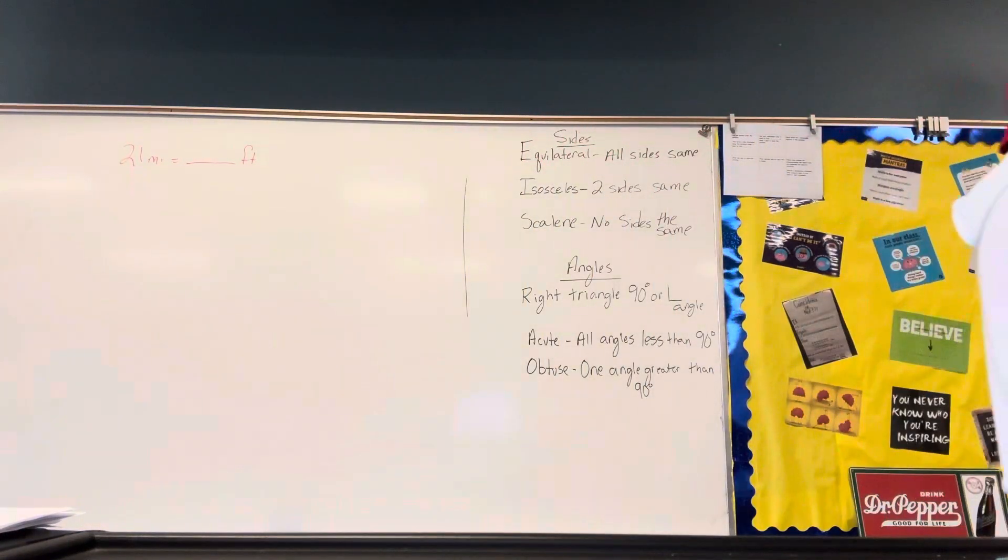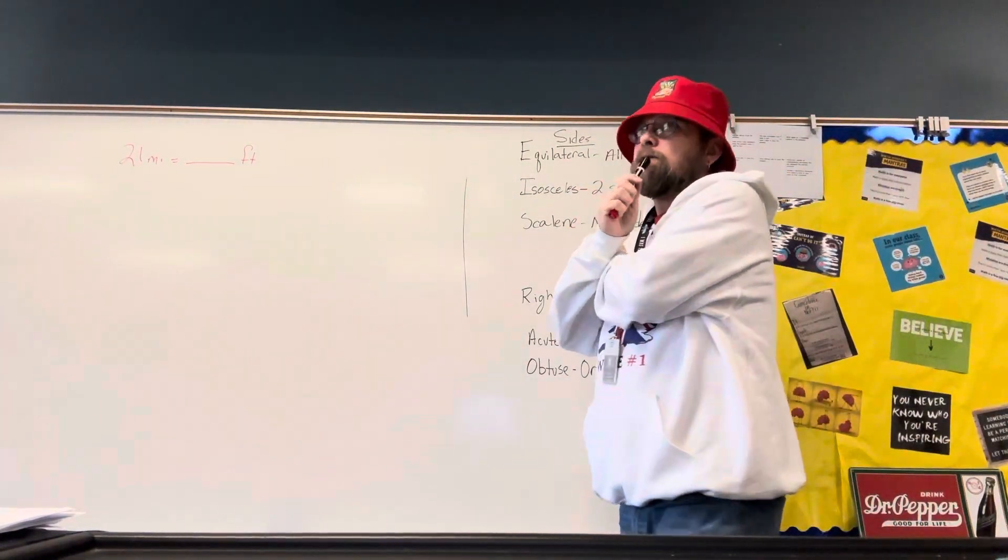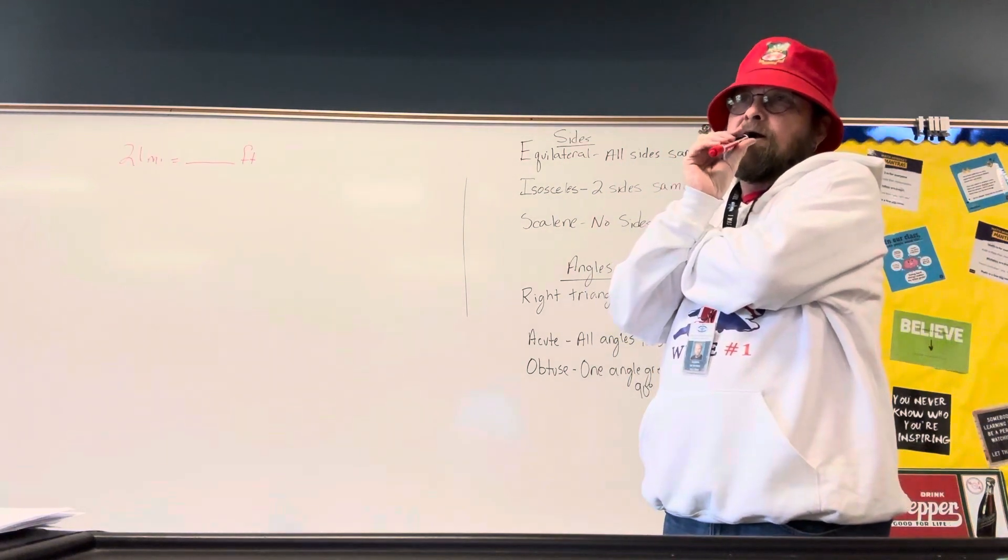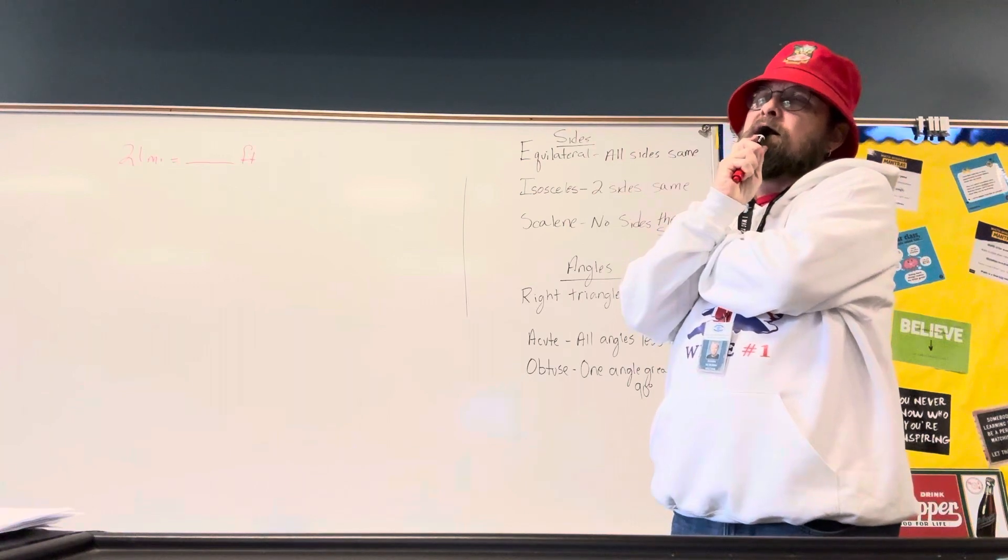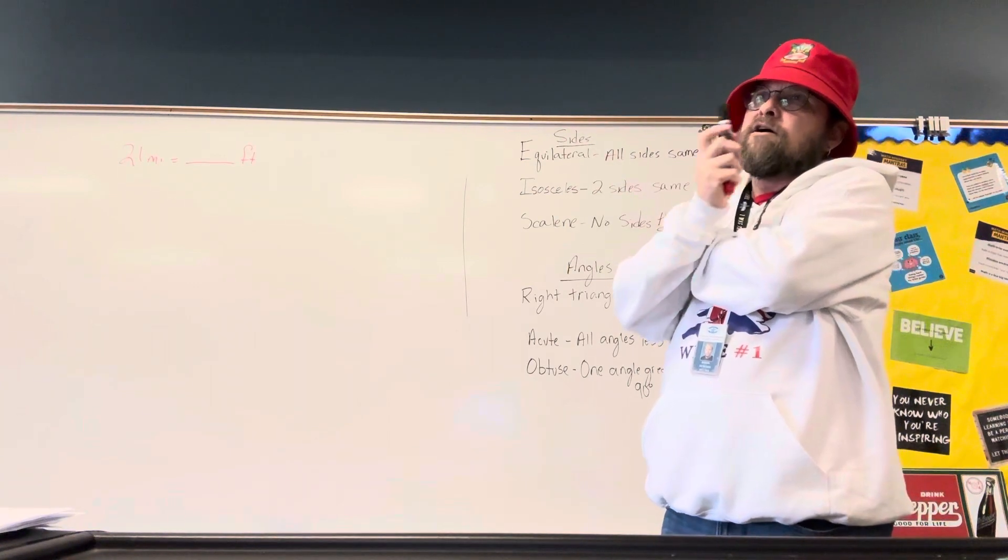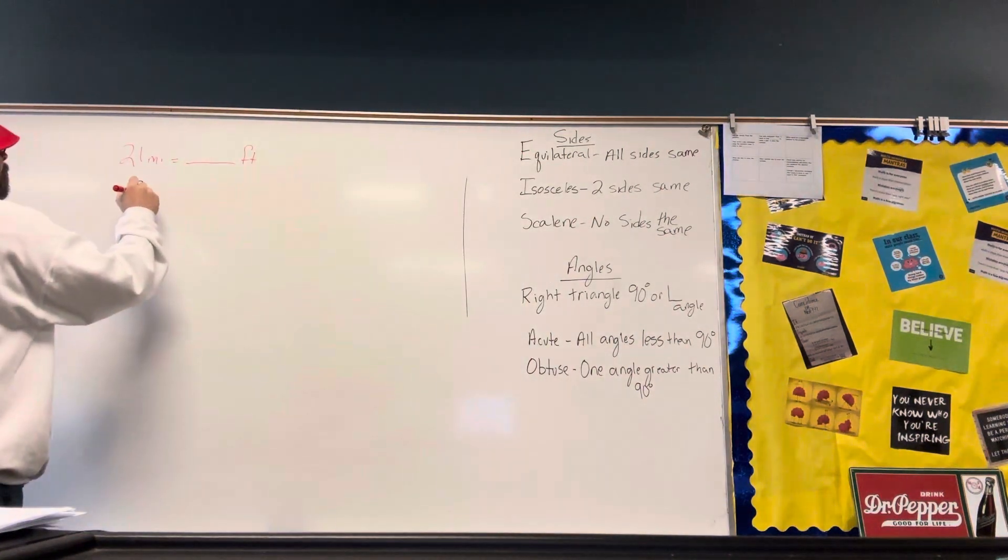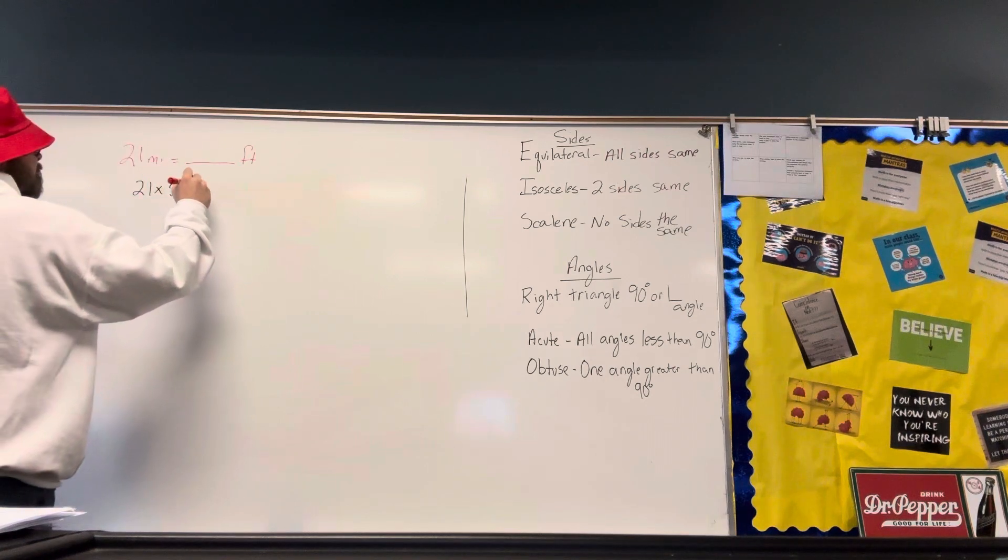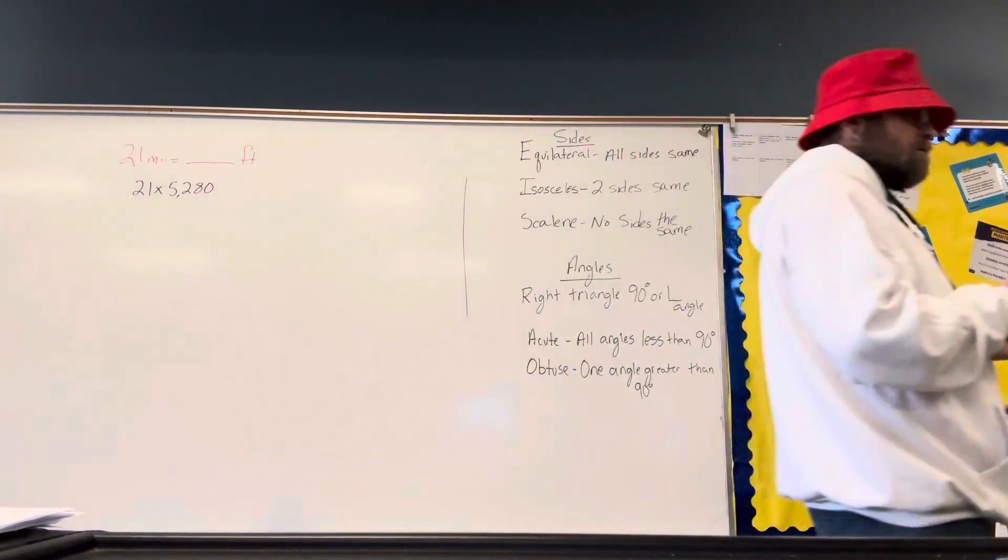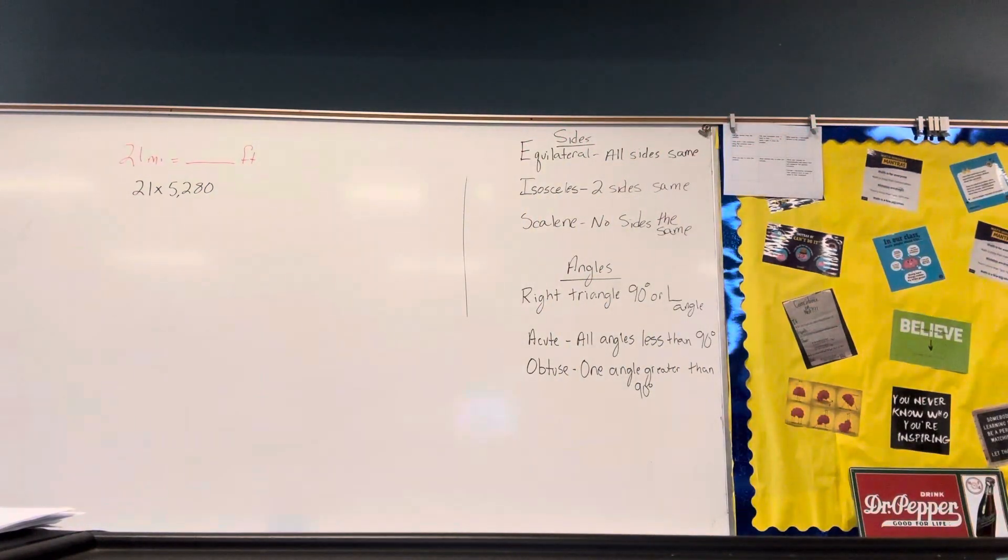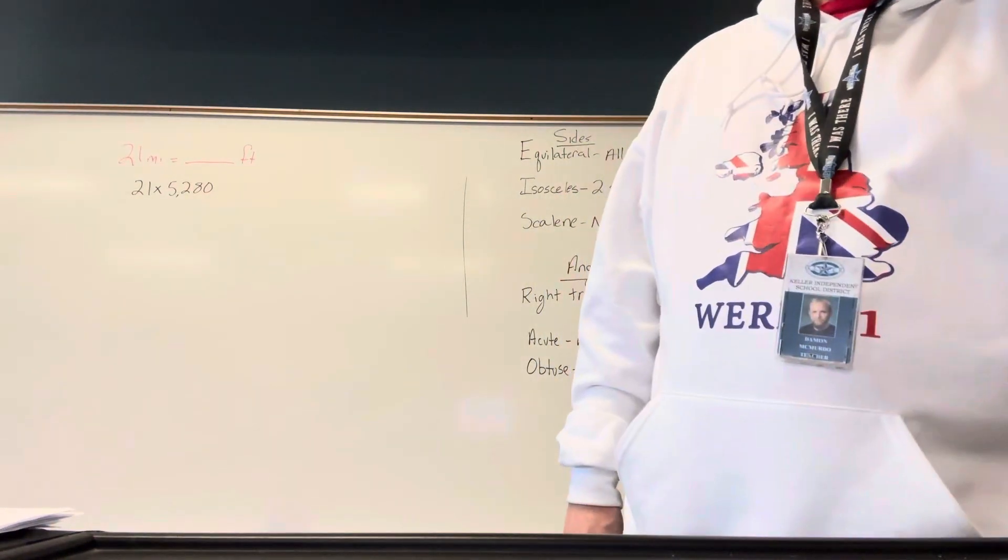How many feet in one mile? Gardner, you're closest. What is it? Good. 5,280. So, to solve this, I would multiply 21 times 5,280. I'd multiply 21 times 5,280. I don't know it off the top of my head, so we'll just let that go.